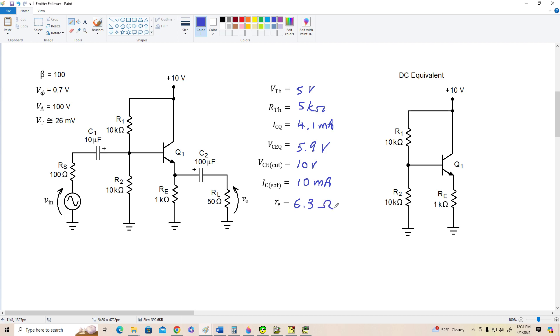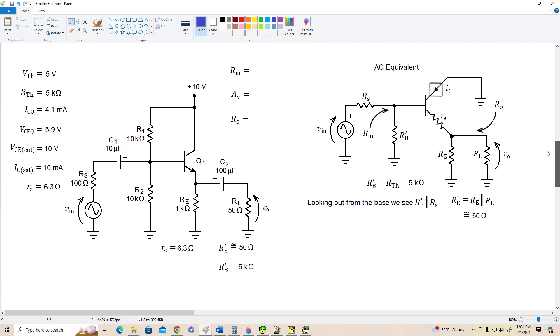Alright, so that was a pretty easy, straightforward analysis. We've done that many times in the past. Now let's go look at the AC equivalent circuit. This is going to be a little bit messier.